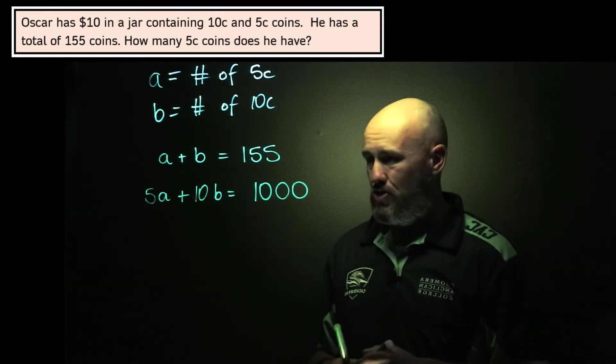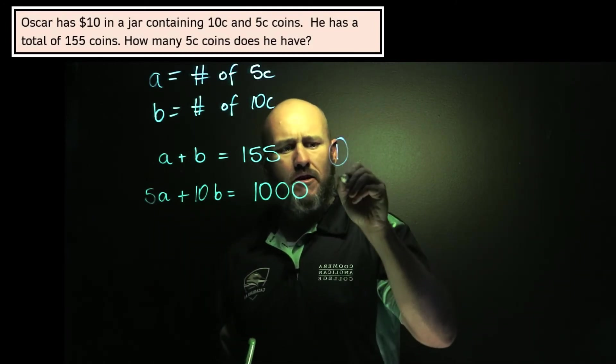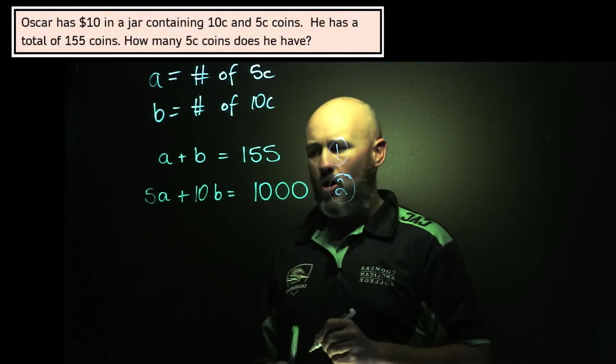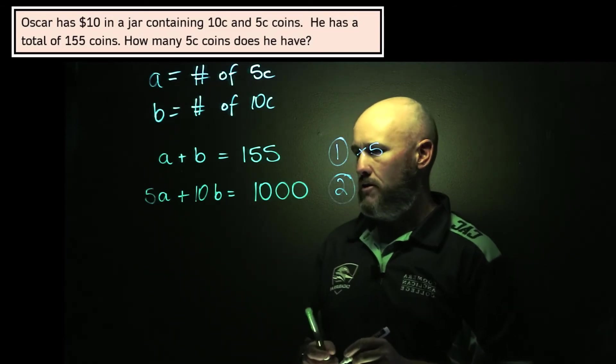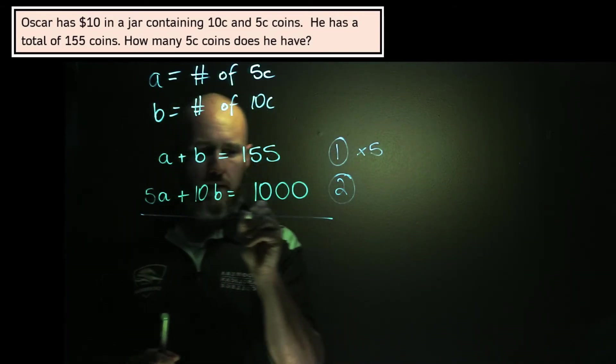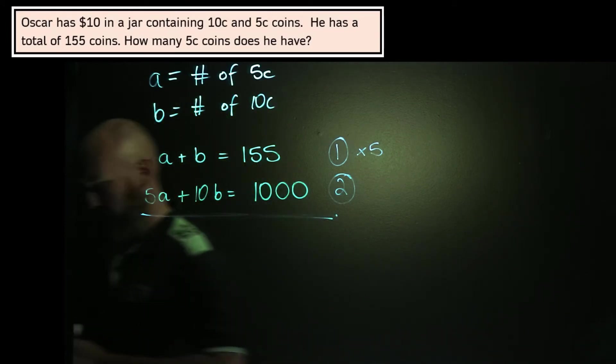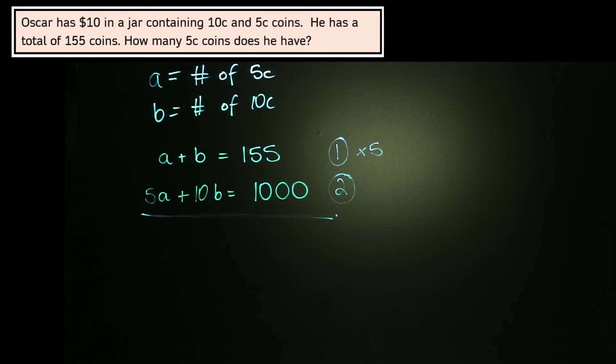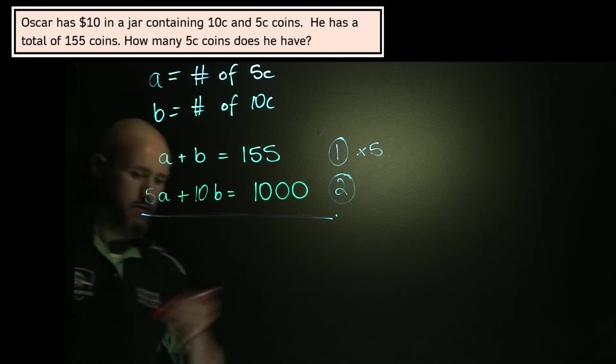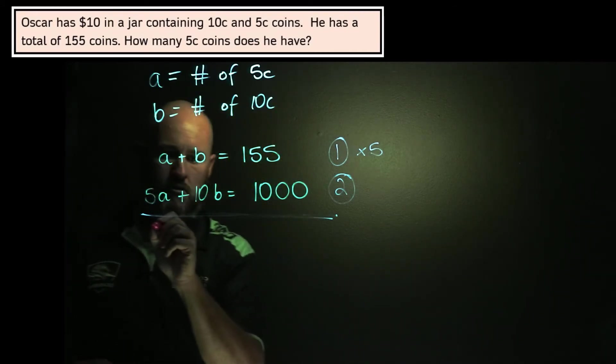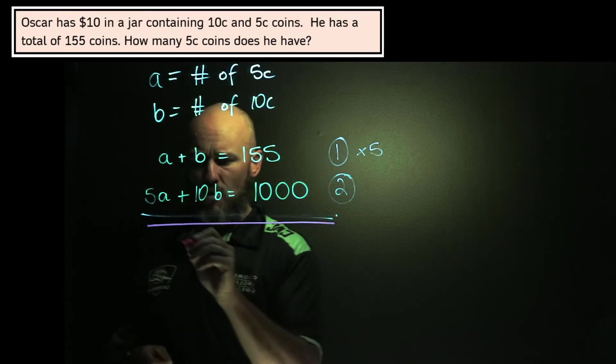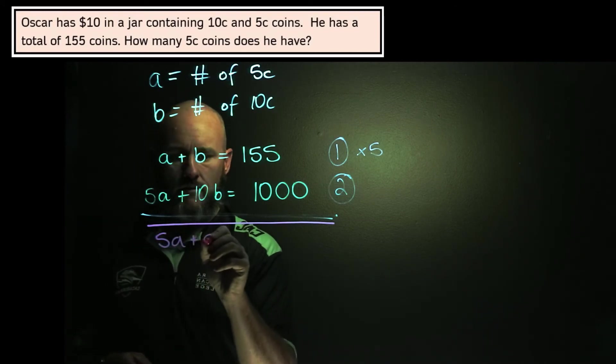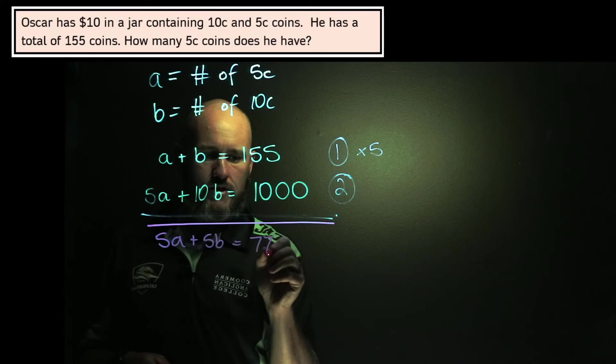So what I'm going to do this time is I'm going to use a bit of elimination. If I call this equation 1 and this equation 2, well, what I'm going to recognize is that if I multiply this by 5, well I get 5 A's on both sides. It's a bit tricky here, but we can get there. Just a little change of color there, because the white wasn't working too well. So let's do this multiplied by 5 first. 5A plus 5B equals 775. You have a calculator.